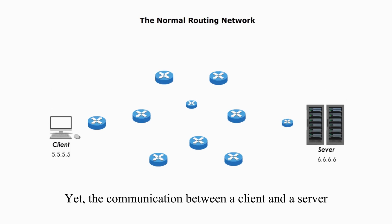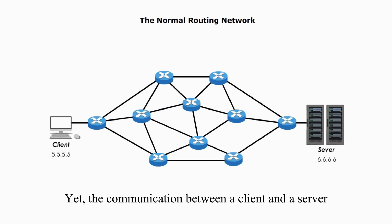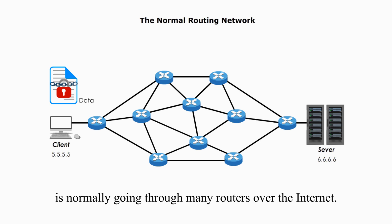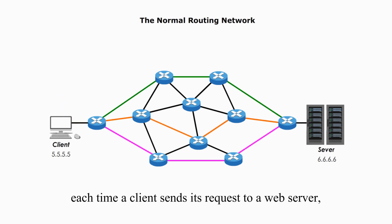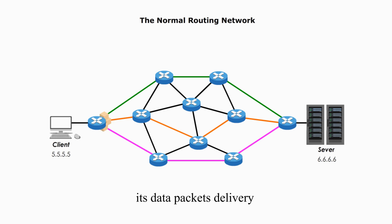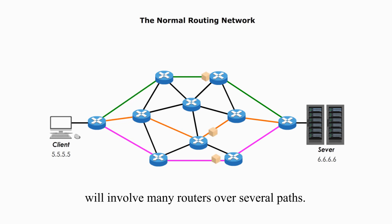Yet the communication between a client and a server is normally going through many routers over the internet. For example, each time a client sends its request to a web server, its data packets delivery will involve many routers over several paths.